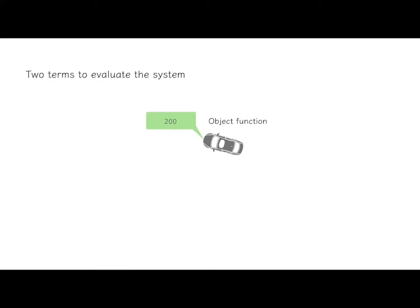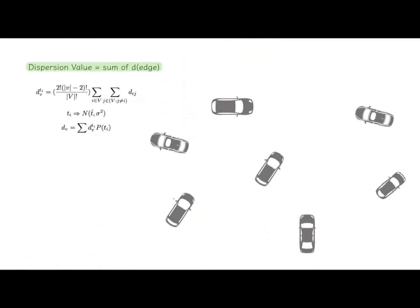Here we come to the swapping process. Every time a new request is accepted, we're going to check if any of the unfinished requests can be assigned to a different vehicle, which benefits the whole system. In order to evaluate the system's performance better, we're taking factors like dispersion value and equity value, anticipating the outcome that a swap may bring.